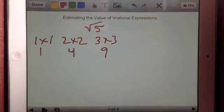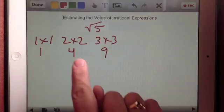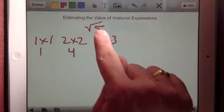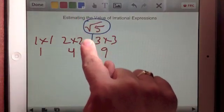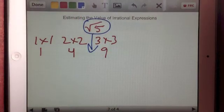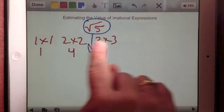3 times 3, that equals 9. 9 has now passed 5, and it's a little bit more past 5 than 4 is before 5. So we know that square root of 5, the value falls in between 2 and 3.